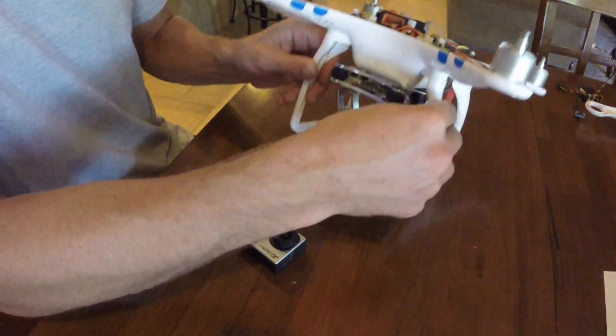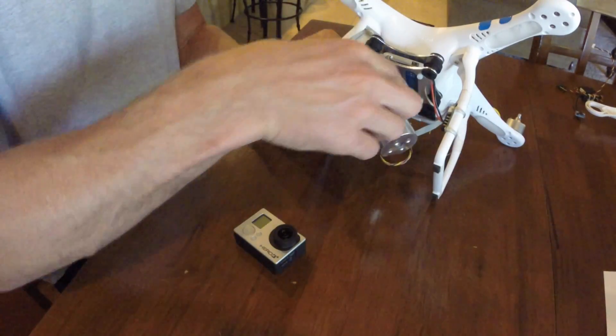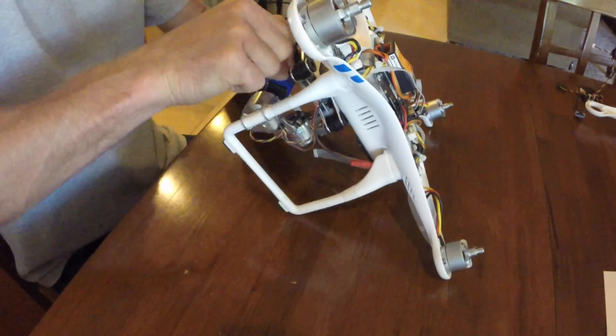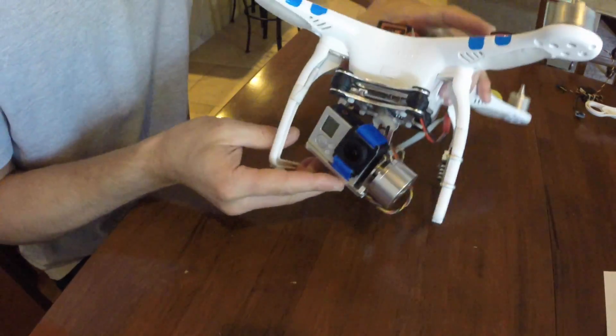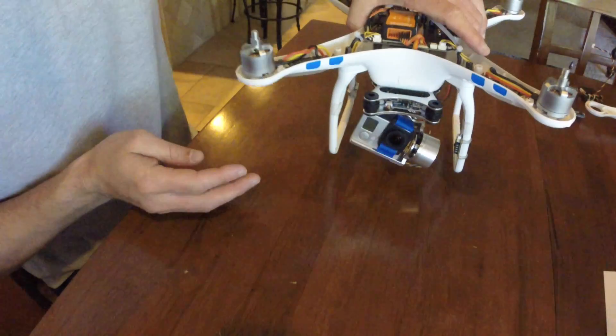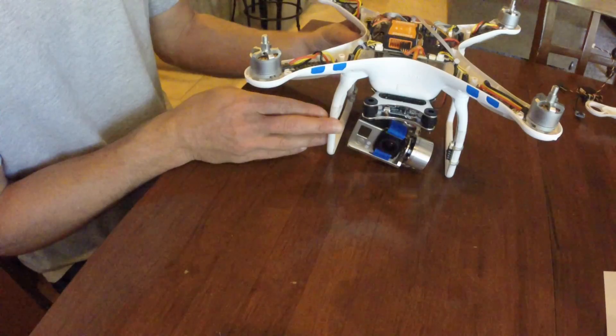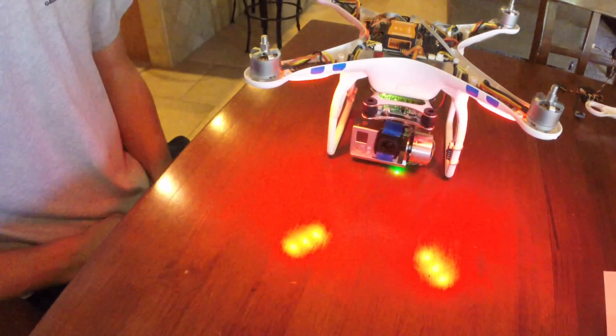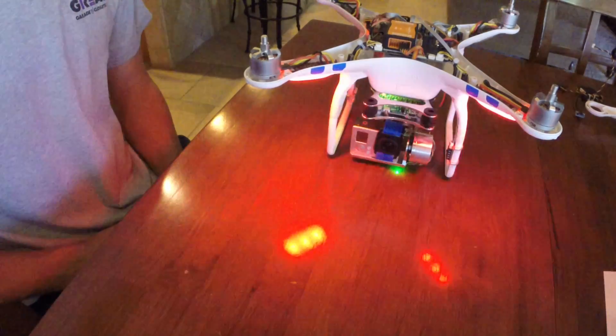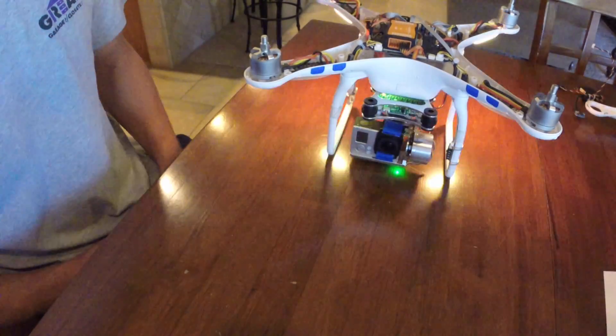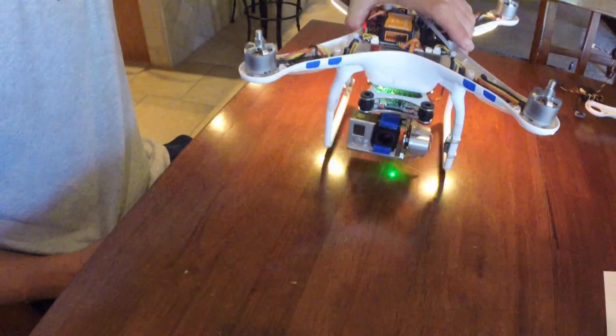Now that you have the power connected, it's time to install the GoPro. You do not want to turn your gimbal on until the camera is mounted or you have weight on the gimbal. Once the GoPro is installed, turn your Phantom's power on. You will see that the GoPro will level itself out.